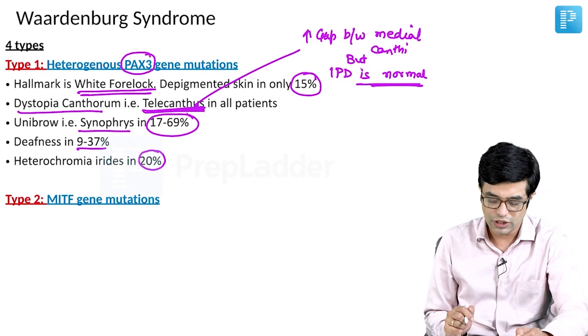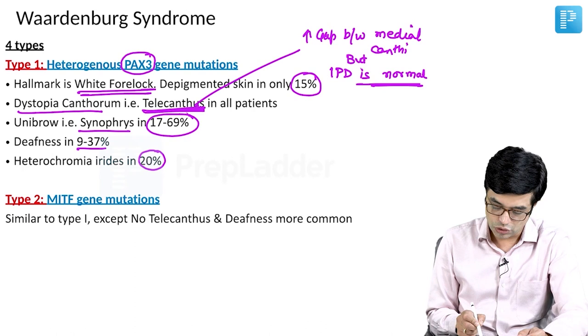Type 2 has MITF gene mutations. It is similar to Type 1 except there is no telecanthus, and deafness is found to be more common compared to Type 1.